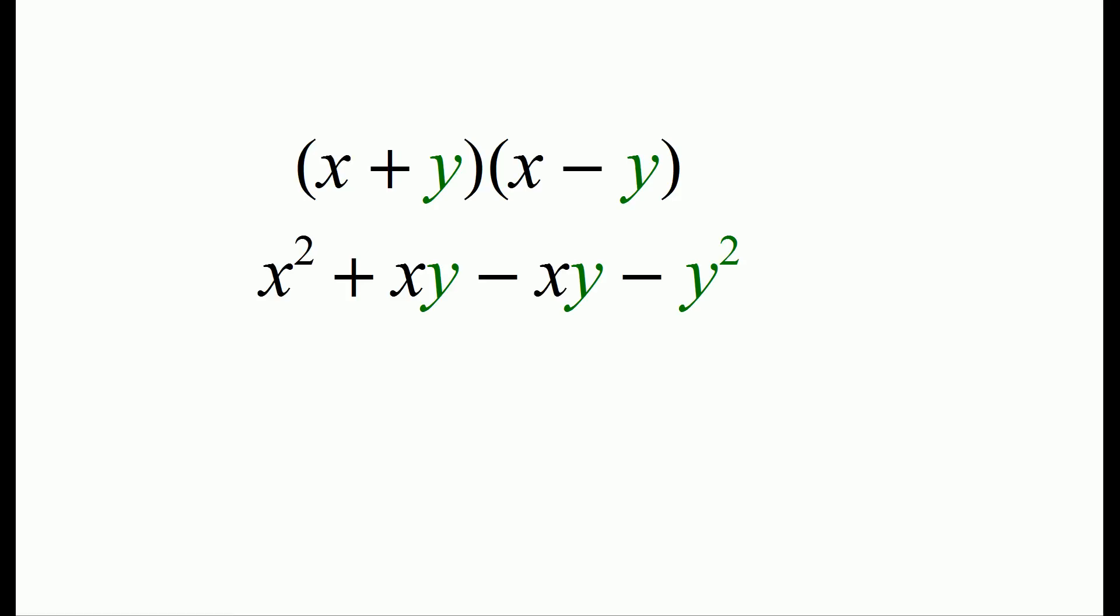Expanding that out, we get x squared plus xy minus xy and minus y squared. The terms of xy cancel out, leaving us x squared minus y squared. And the x squared is why we square the average. And the minus y squared is why we subtract the square of the difference from the average.